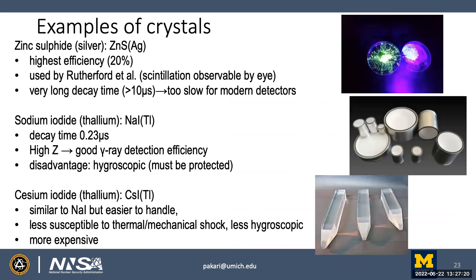Zinc sulfide is a classic scintillator with very high light yield efficiency — used by Rutherford because he could see scintillation by eye — but its decay time is beyond tens of microseconds, which is too slow for modern systems. More modern detectors include sodium iodide doped with thallium, NaI(Tl), giving intermediate energy states in the bandgap for luminescence, with decay time under one microsecond and high Z for good gamma detection efficiency. Its disadvantage is that it is hygroscopic and must be protected with casings. An alternative is cesium iodide doped with thallium, CsI(Tl): easier to handle, less susceptible to thermal and mechanical shocks, less hygroscopic, but more expensive.